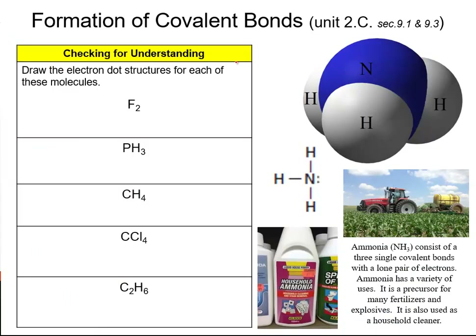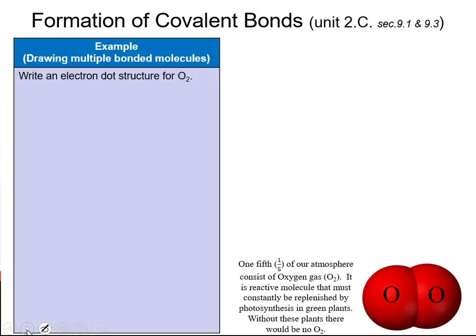Why don't you try these out? These are the simple electron dot structures for covalent bonds. If you have any questions, hit me up at tutorial. Now, what about molecules that have more than one bond — the more challenging ones? Let's try oxygen for that matter.